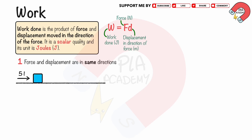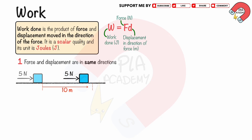If a 5 Newtons force acts on a box, causing it to move 10 meters in the same direction, as shown, the work done can be calculated using W equals FD. Substituting F equals 5 Newtons and D equals 10 meters, we get the work done equals 50 joules.